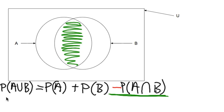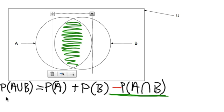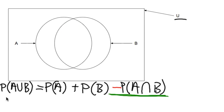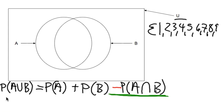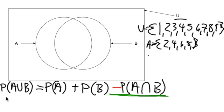Let's put some numbers on this. This is the example used in class, where the universal set is 1 through 9: 1, 2, 3, 4, 5, 6, 7, 8, and 9. Set A is multiples of 2, so that's 2, 4, 6, 8. And B is multiples of 3, so that was 3, 6, and 9.